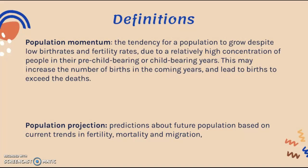Childbearing years could range from around ages 18 to 40, or even teenage years for pre-childbearing. This means in the future there will be an increase in birth rates, and these births may exceed deaths, causing the population to grow. There's also the key term population projection, which are predictions about future populations based on current trends in fertility, mortality, and migration.